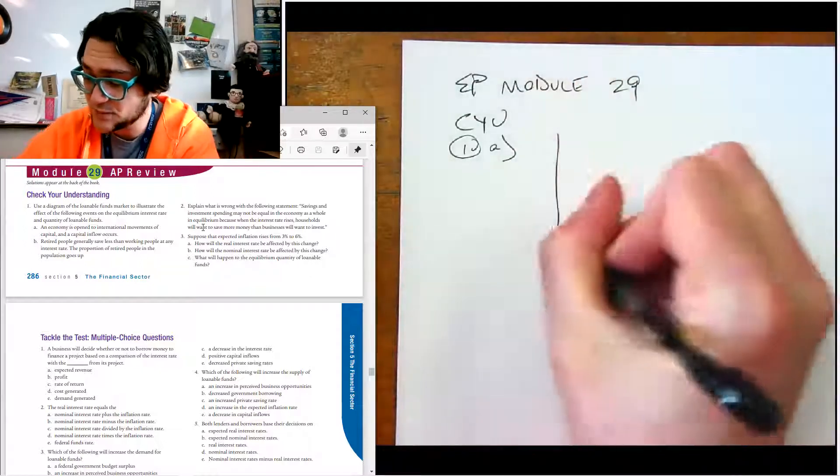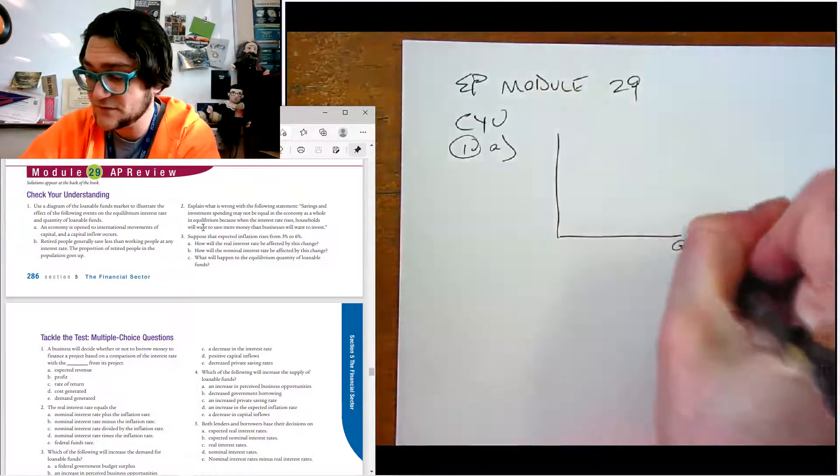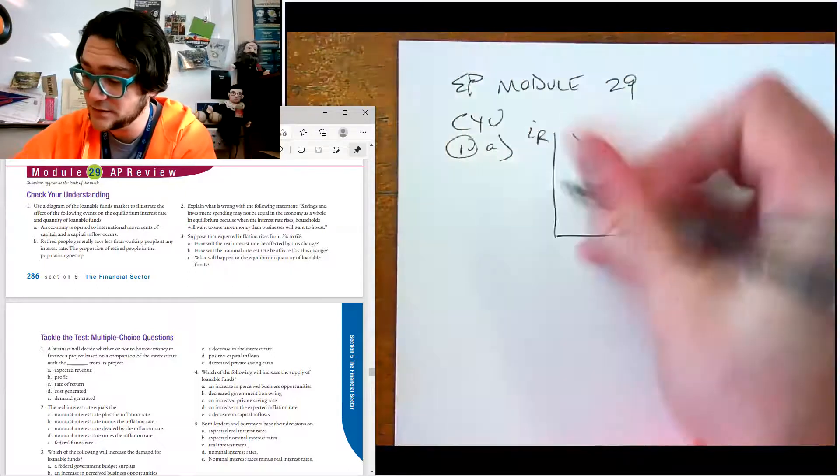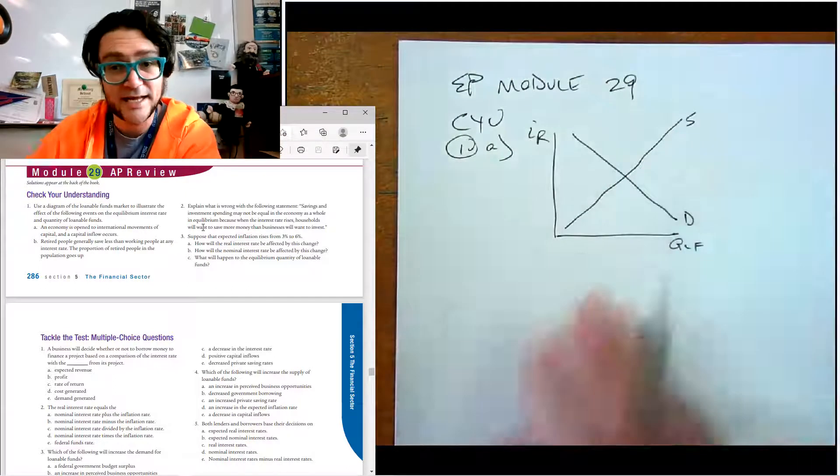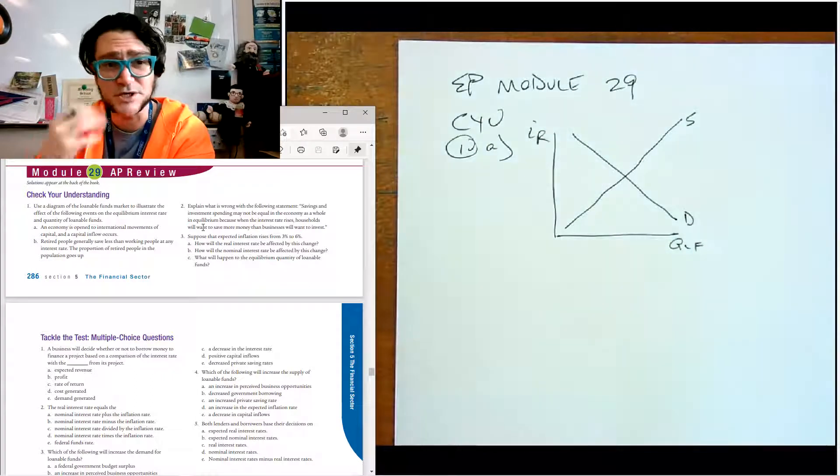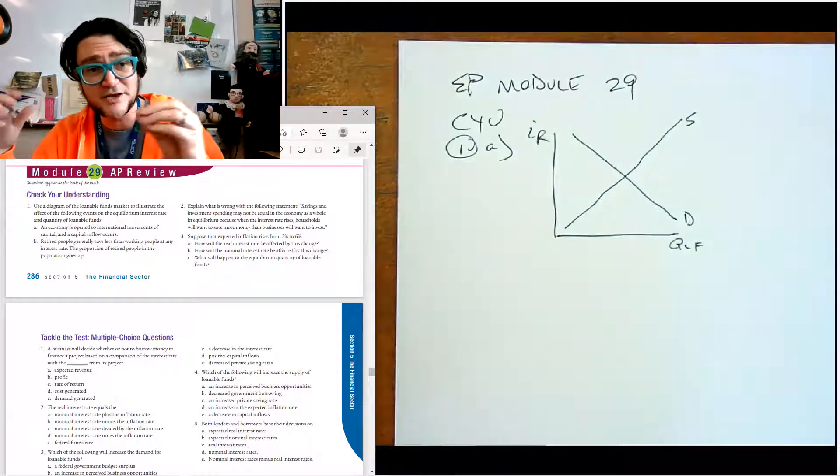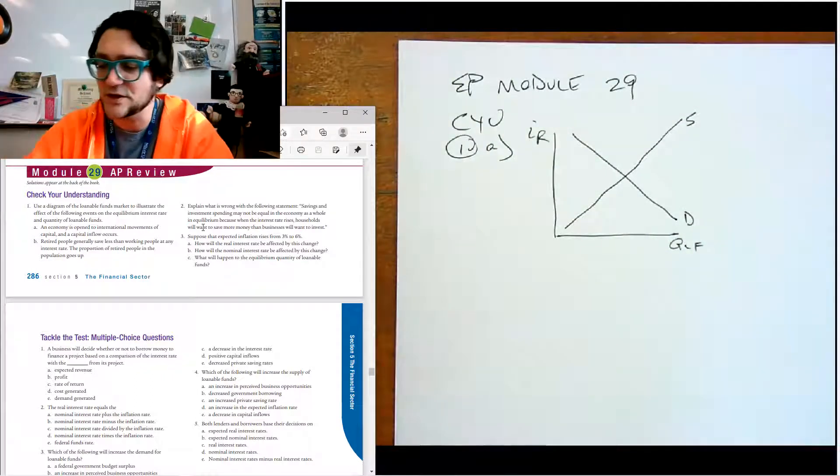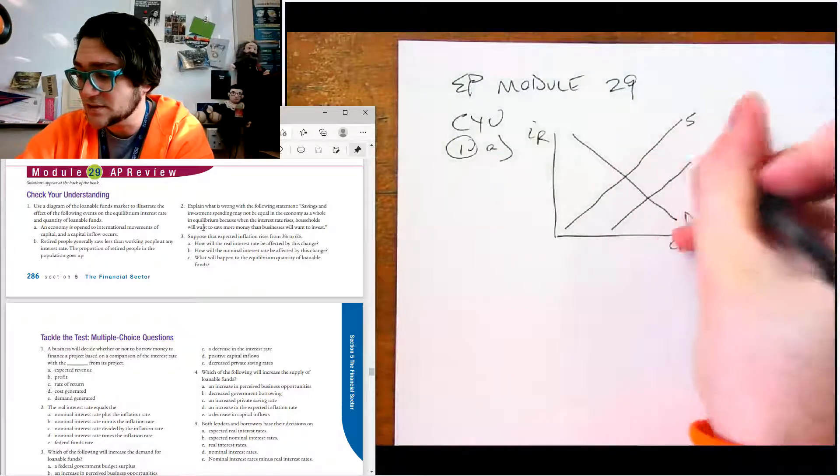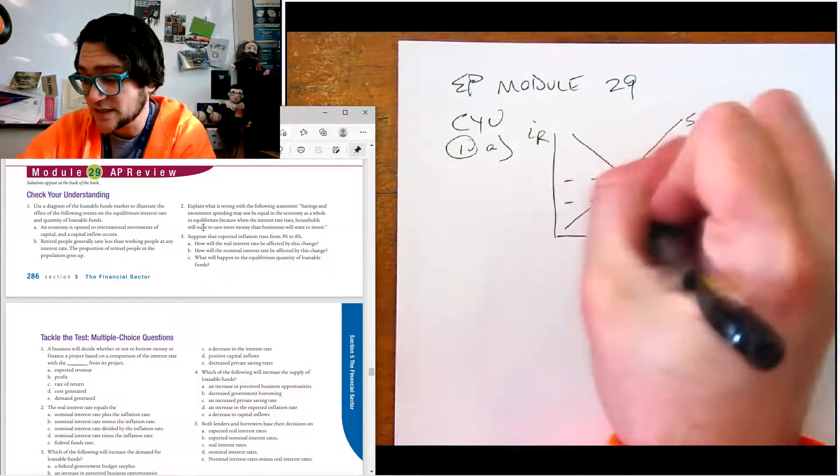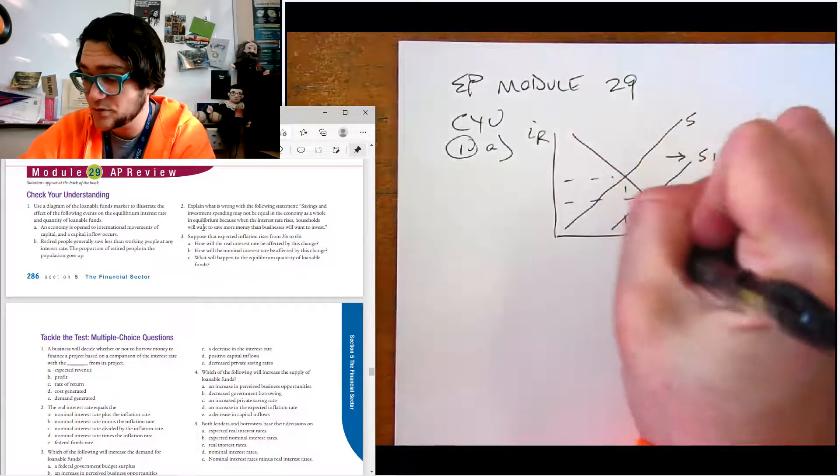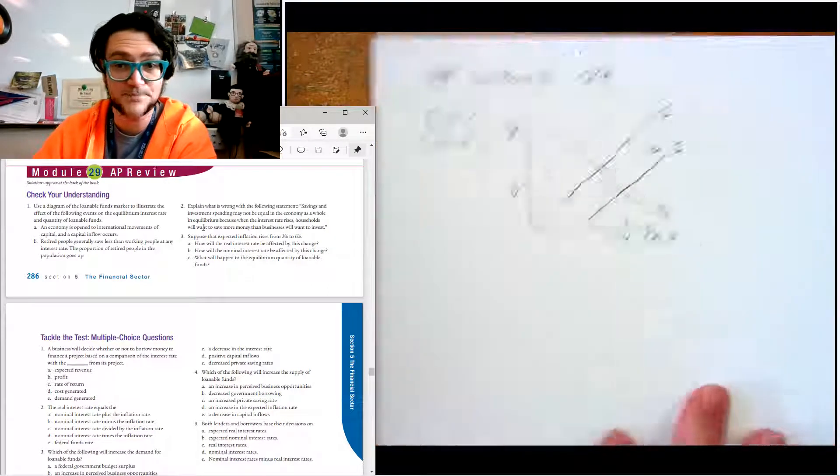So for this one, we want to start with QLF, IR, demand and supply. And it says an inflow occurs. So an inflow is money flowing in, and so there's an increase in the supply of loanable funds. And so we'd say the quantity goes up and the real interest rate goes down.